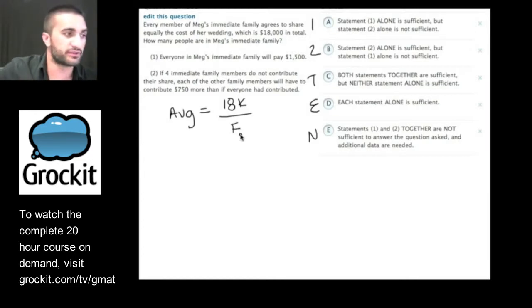Even though they don't talk about the word average, they say every member of Meg's immediate family agrees to share equally. So that's like the average. They're going to break it up equally. The cost of her wedding. I know average questions always have three pieces: the average, the total, and the number of things we're dealing with. They're asking how many people are in Meg's immediate family. I said F for family. And the total is $18,000. They told us that. And average, I don't know. So I don't have enough information currently.